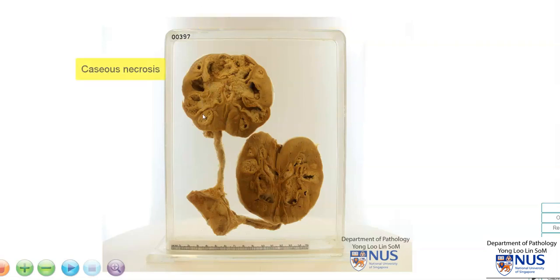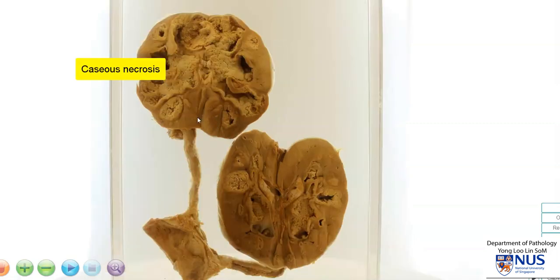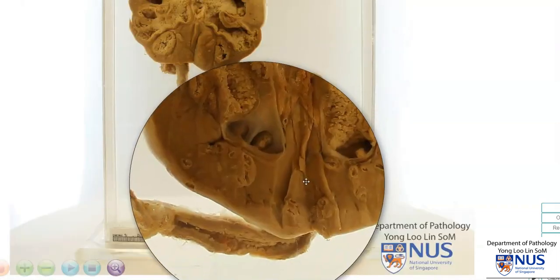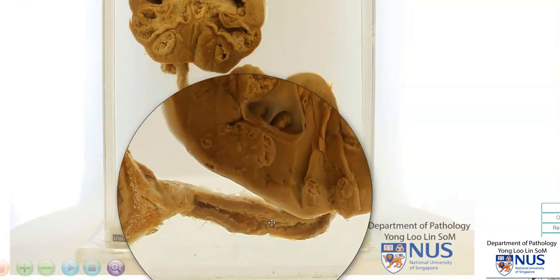This is causing extensive caseous necrosis, and probably also involving some parts of the renal parenchyma itself, and also involving the ureter. We can appreciate that this ureteric wall is thickened, and there are some sloughy areas here, which are also likely to represent caseous necrosis and granulomatous inflammation.